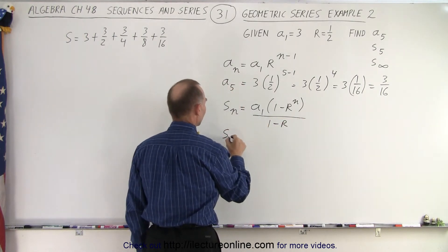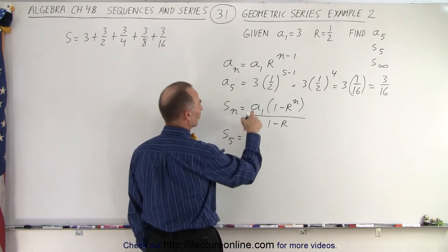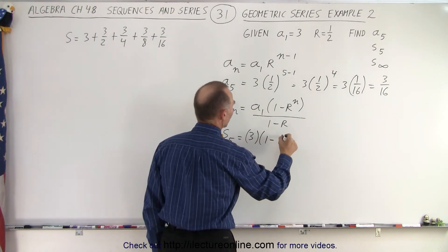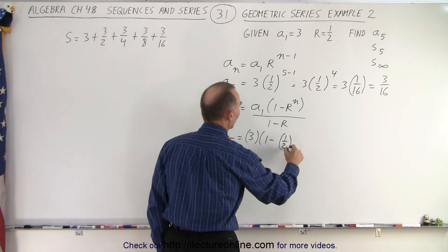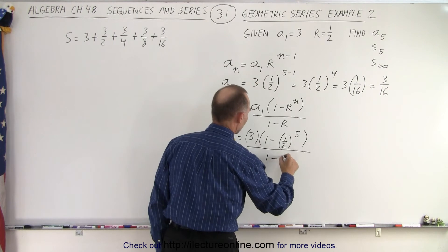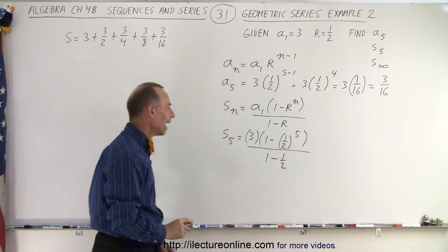So that means that s of the first five terms, the sum of the first five terms is the first term, which is 3, times 1 minus the common ratio, which is 1 half, raised to the n power, which in this case is 5, divided by 1 minus the common ratio, which is 1 half.